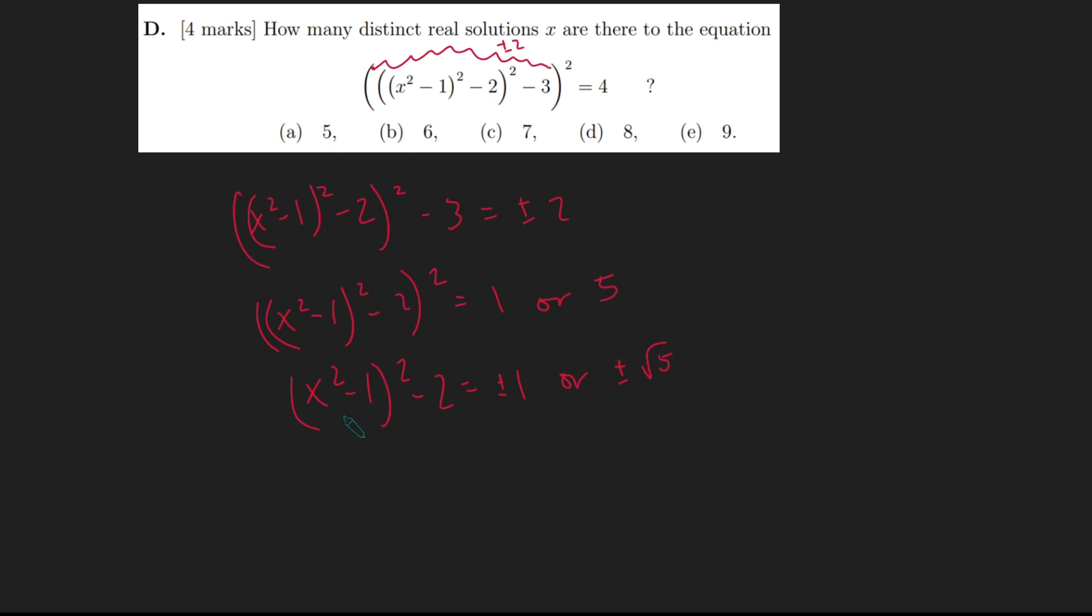Now if we add 2 to both sides, we get x squared minus 1 squared equals 2 plus or minus 1, which is 1 or 3, and then or 2 minus root 5 or 2 plus root 5. However, 2 minus root 5 is a negative number because root 5 is obviously going to be bigger than 2 because 5 is bigger than 4. And so therefore, we know that x squared minus 1 squared can't be equal to this. So we can ignore that, but the other three are still in play here.